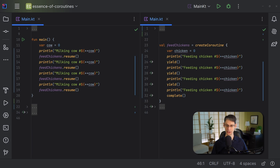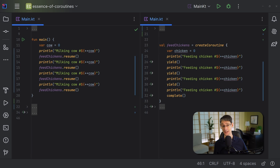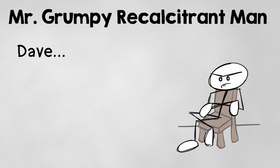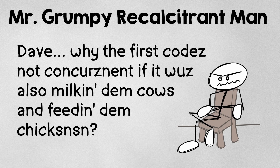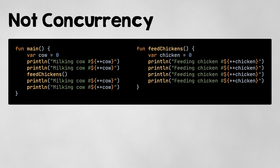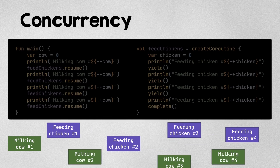Whereas the previous code fed all the chickens in one go, this version interleaves the tasks of milking cows and feeding chickens. Code that runs like this is said to be concurrent, because we're working on multiple tasks over a period of time. You might ask why the first code wasn't concurrent if it was also milking cows and feeding chickens. Well, in that example we were doing two tasks over a period of time, but a diagram of that work would show all of the chickens fed at once. In order to be considered concurrent, we need to bounce back and forth between the tasks, doing a little bit of each task each time.